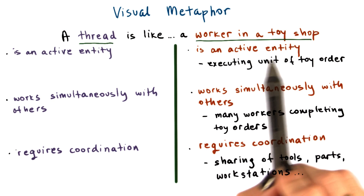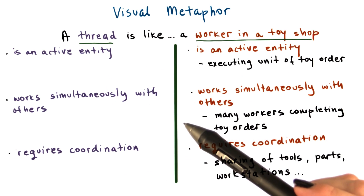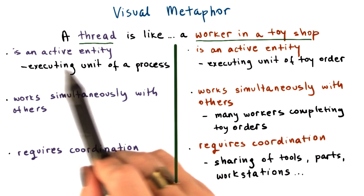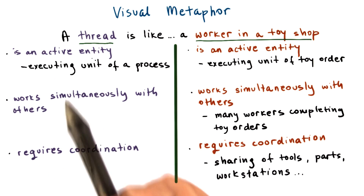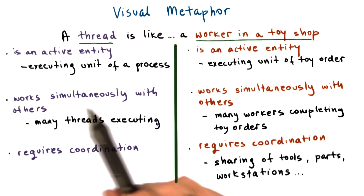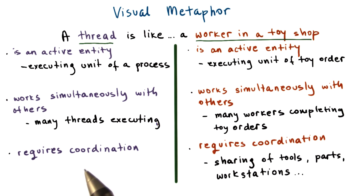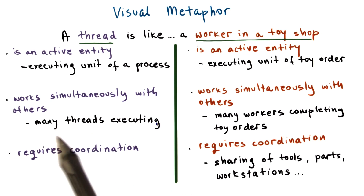Now that we know about workers in a toy shop, what about threads? How do they fit into this analogy? First, threads are also active entities. Except in this case, threads execute a unit of work on behalf of a process. Next, threads can also work simultaneously with others, and this is where the term concurrency really applies. For instance, in modern systems that have multiple processors, multiple cores, you can have multiple threads really at the exact same time executing concurrently.